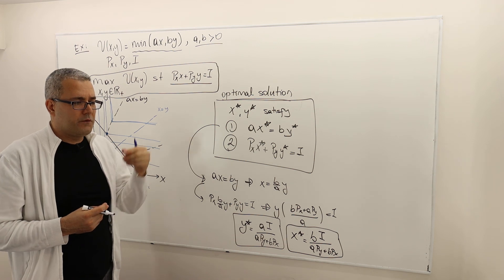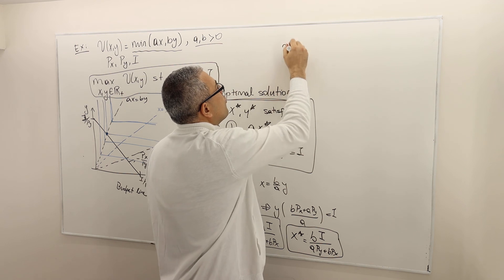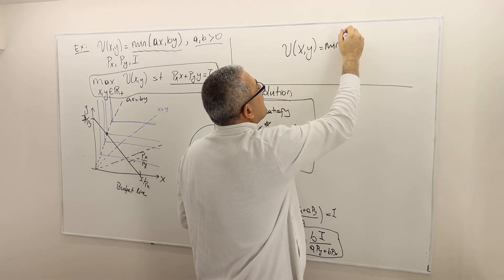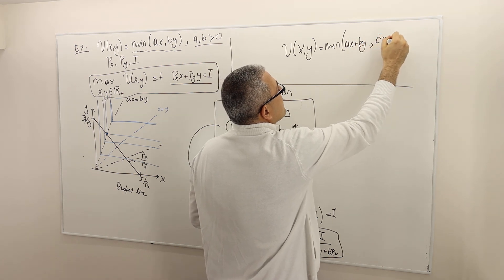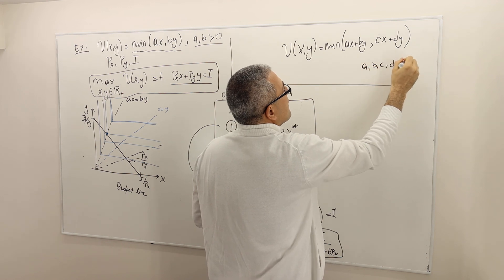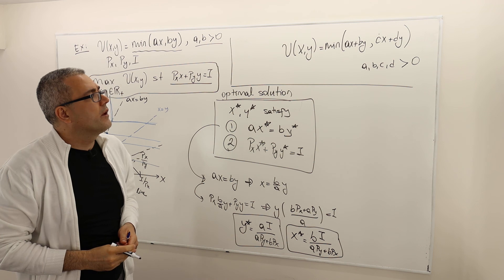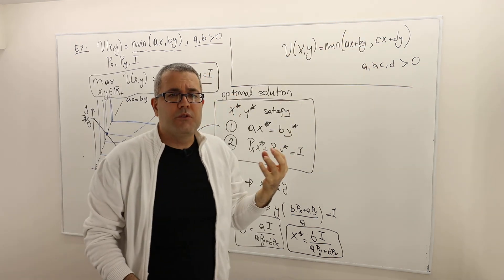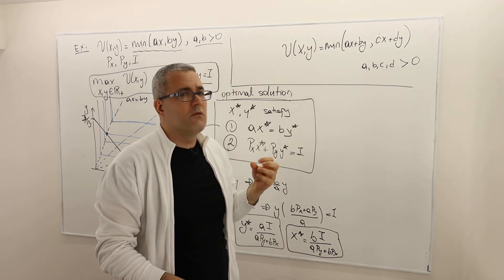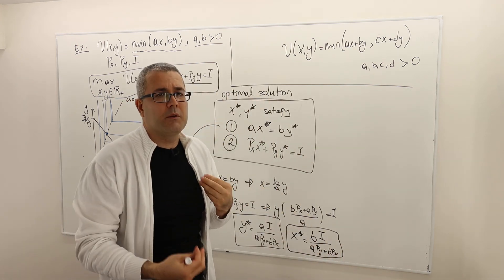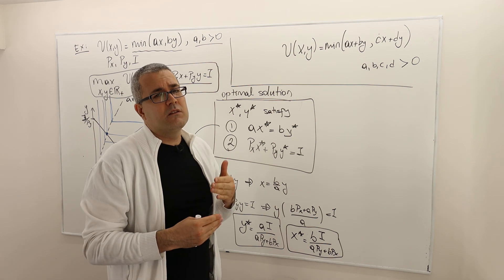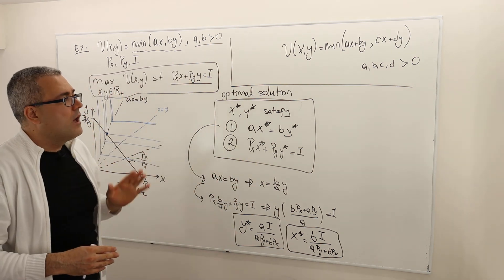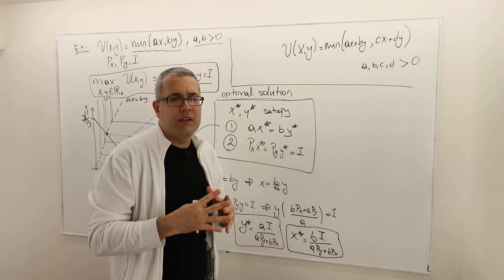I'm not going to fully solve it, but a very similar question would be if utility of XY is equal to minimum of AX plus BY comma CX plus DY, where A, B, C, D are all some positive real numbers. Okay. So this is, again, a min function, right? It's like complementary goods. But there's also this substitute, perfect substitute type of relationship. So it's sort of a combination between substitution and complementarity. So how am I going to solve it? Again, the Lagrangian is not going to help you because you cannot differentiate this function. So you have to draw the indifference curves.